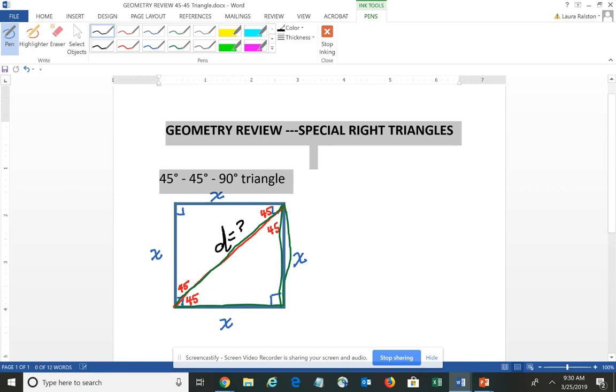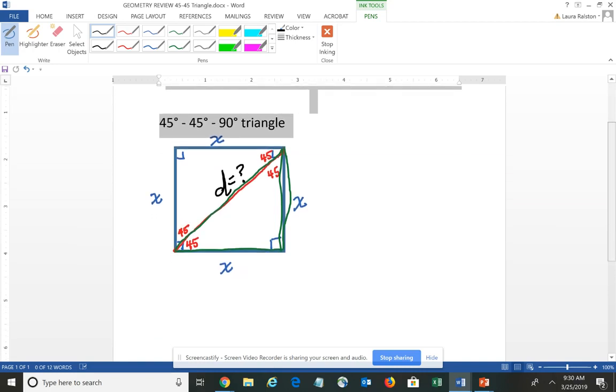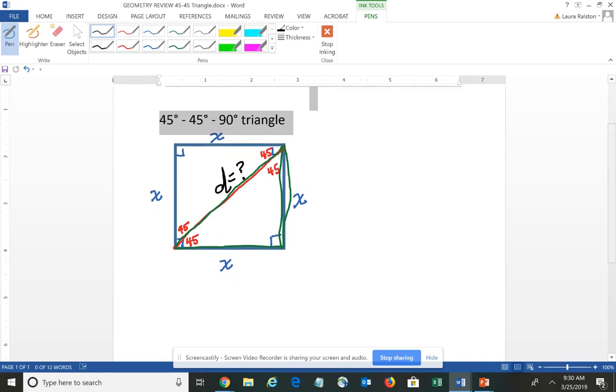But if we use Pythagorean theorem, we can develop a relationship between the legs and the diagonal. So if I apply Pythagorean theorem, which we have leg squared plus leg squared equals the diagonal squared, so X squared plus X squared gives me 2X squared, which equals the diagonal squared. And I'm trying to solve for the diagonal squared.